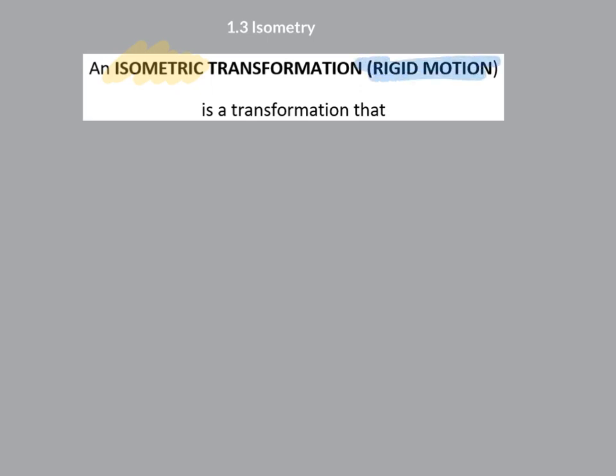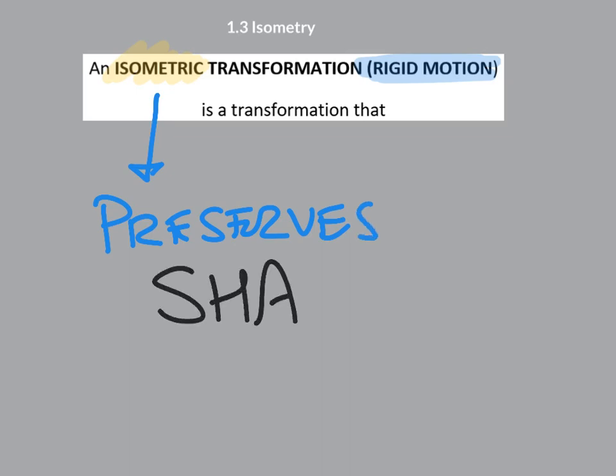Now to be rigid helps us to know what isometry means. If you're rigid, it means you're firm and locked into place. That's kind of what it means to be isometric as well. An isometric transformation is one that preserves shape, size.